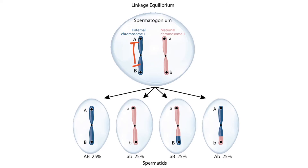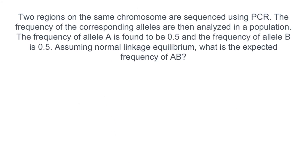Notice from the figure that there's a 25% chance of inheriting each of the possibilities: Big A Big B, little a little b, little a Big B, and Big A little b. So if we look at the question again, we can see that alleles Big A and Big B are on the same chromosome and their frequency in the population is 0.5 and 0.5. Because these alleles are in linkage equilibrium, we can assume they are far away from each other and behave as if they were on separate chromosomes.